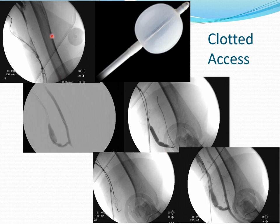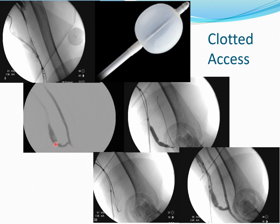This is an example of a thrombosed access. We place two sheaths into the thrombosed access facing each other, then perform mechanical thrombectomy using the different devices. After that, we place a catheter into the artery, inject contrast, and identify the underlying stenosis causing the problem — many times we see multiple stenoses and go ahead and open all of them. This is a picture of the Trerotola device — a basket connected to a motor that rotates rapidly, breaking up the clot into multiple small fragments.